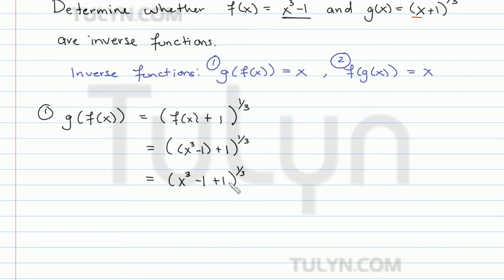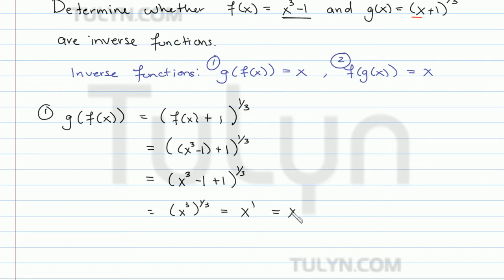The minus 1 and plus 1 cancel, leaving us with (x³)^(1/3). Multiplying the exponents, 3 times 1/3 equals 1, so we get x to the 1st power, which is just x. So we've satisfied the first condition: g(f(x)) = x.